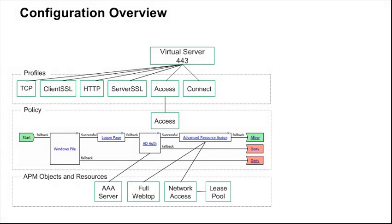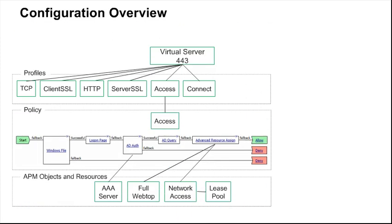Here's a quick look at the configuration overview from the previous scenario. To work with this scenario, the access policy needs to change slightly to add an ADQuery action. Note the ADQuery has the same dependency on the Active Directory AAA server as the ADAuth action. In addition to the network access resource in the Advanced Resource Assign, we will also be adding a portal access resource. Finally, any time a portal access resource is used, the virtual server has to have a rewrite profile configured.